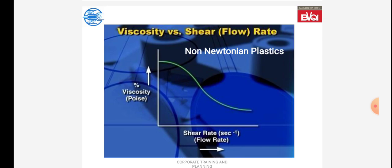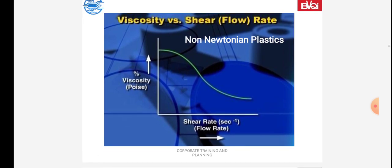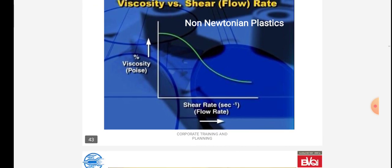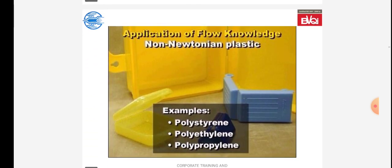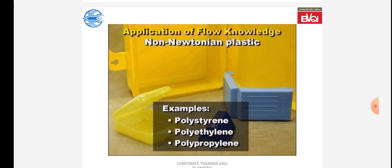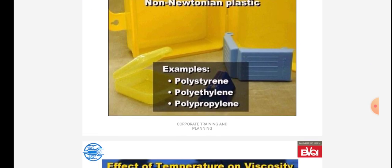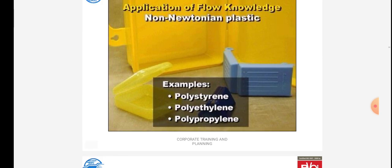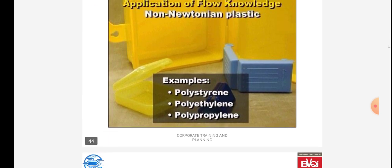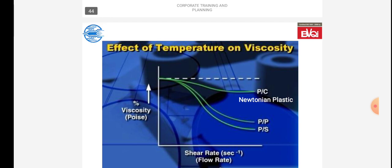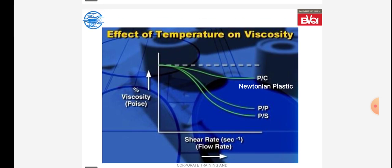This is the graph of non-Newtonian plastics and its application of flow knowledge. Examples of non-Newtonian plastics: polystyrene, polyethylene, and polypropylene. Effect of temperature on viscosity — viscosity versus shear rate.